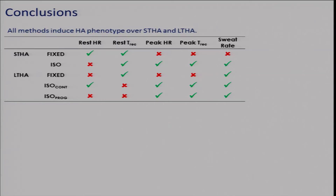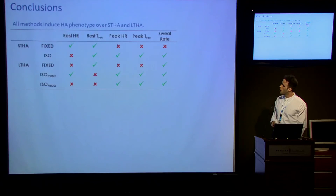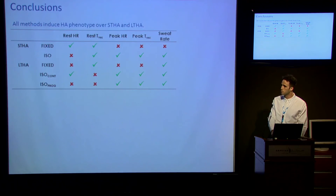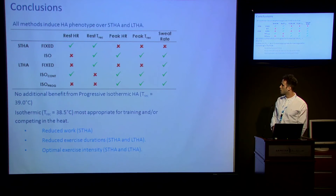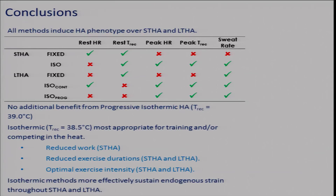We conclude that phenotypic adaptations occur over both long-term and short-term heat acclimation. Data may reflect fixed as more favorable for resting measures, and isothermic as more favorable for higher intensities. There is no benefit from using a progressive isothermic model. We think the isothermic model is more appropriate for training and competing in the heat due to reduced work, reduced exercise durations, more optimal sport-specific exercise intensity, and more effective endogenous strain.